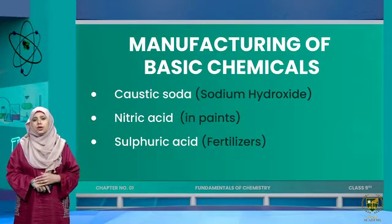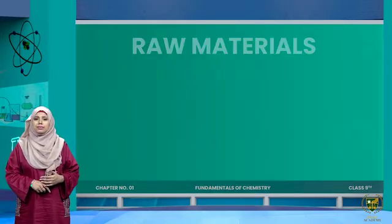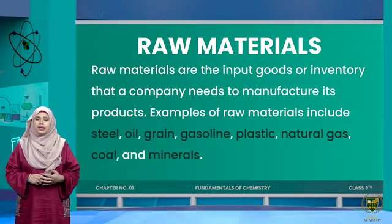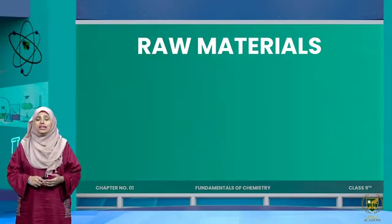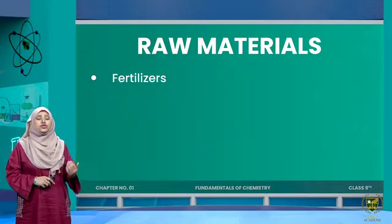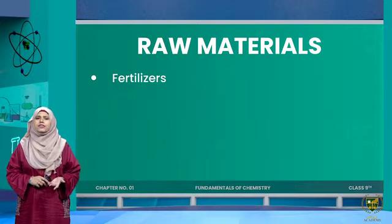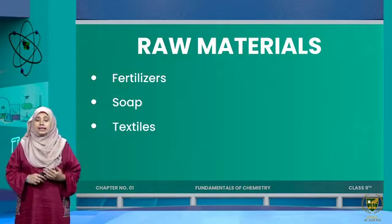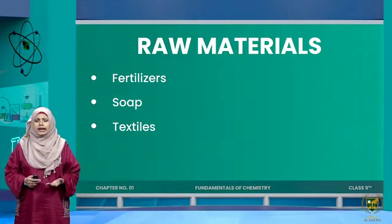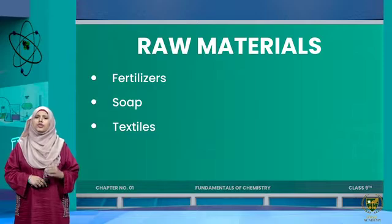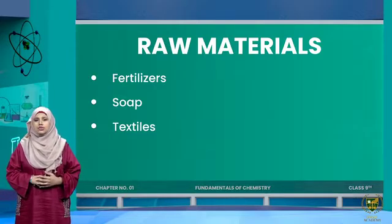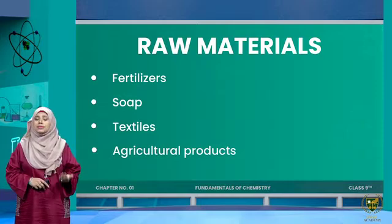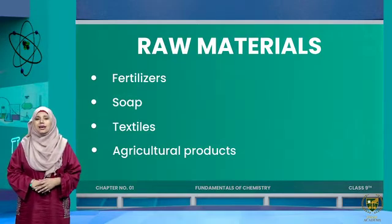Many other chemicals are used as raw materials to prepare manufactured or processed goods in different industries. For example, sulfuric acid is used in the fertilizer industry to make fertilizers for crops. Sodium hydroxide (caustic soda) is used in the soap industry. The textile industry requires various chemicals for dyeing — removing old colors and applying new ones. Industrial chemistry also covers agricultural products, fertilizers, paints, and paper industries.